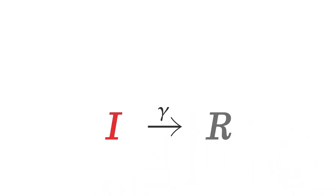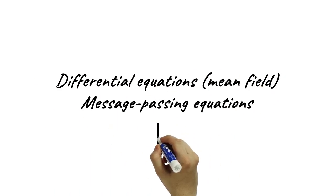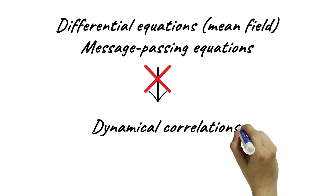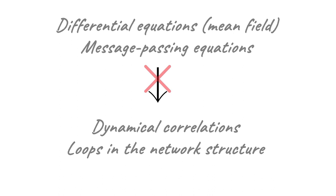Gamma is the recovery rate. Previous approaches model the SIR process by neglecting dynamical correlations and loops in the network structure.